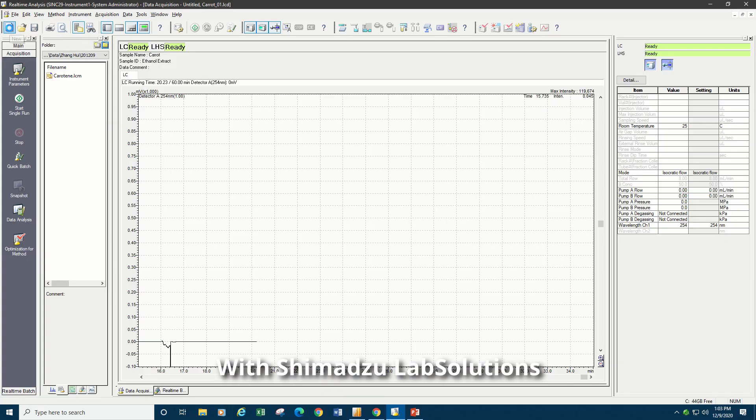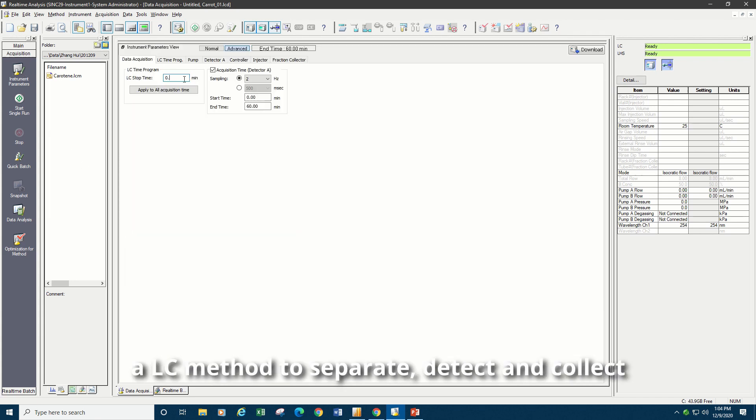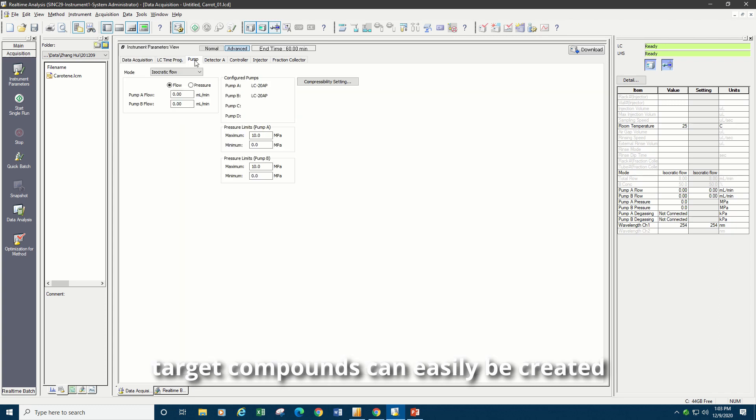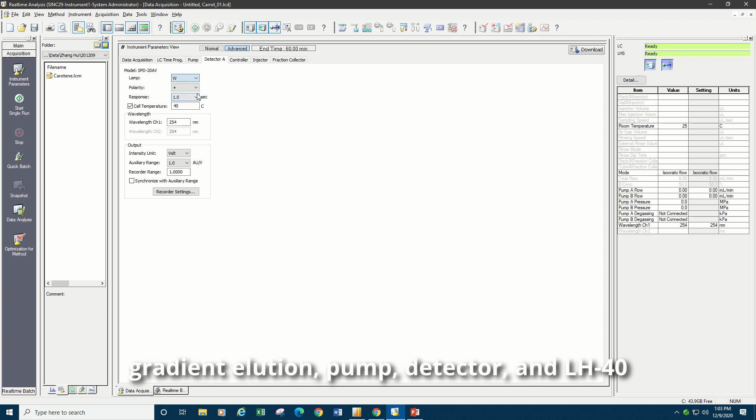With Shimadzu Lab Solutions, a LC method to separate, detect, and collect target compounds can easily be created. The parameters of data acquisition, gradient elution, pump, detector, and LH40 should be set properly to obtain expected results.